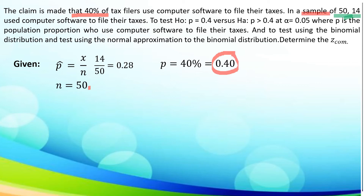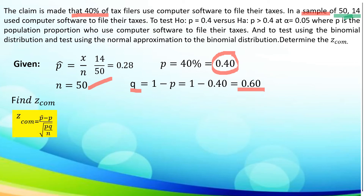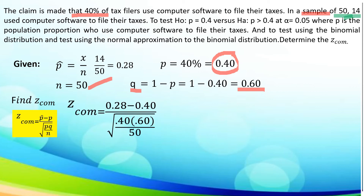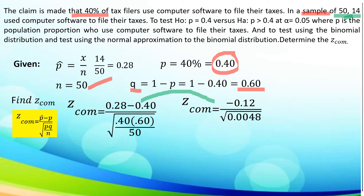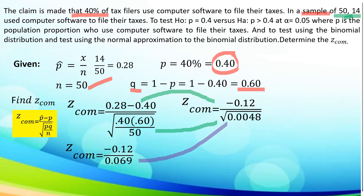The sample is 50. To get Q, we have 1 minus P, where P is 0.40, so 1 minus 0.40 is 0.60. Now let us use the formula for Z-com: P-hat minus P, all over the square root of PQ over N. Substituting the given, we have 0.28 minus 0.40 divided by the square root of 0.40 times 0.60 all over 50. The result of 0.28 minus 0.40 is negative 0.12. And the square root of 0.40 times 0.60 divided by 50 is the square root of 0.0048, which equals 0.069. Dividing negative 0.12 by 0.069, we have negative 1.739.